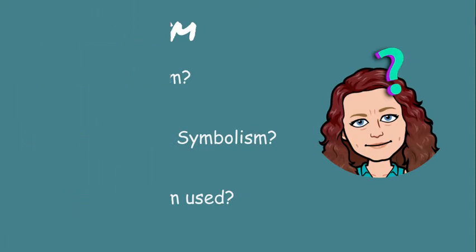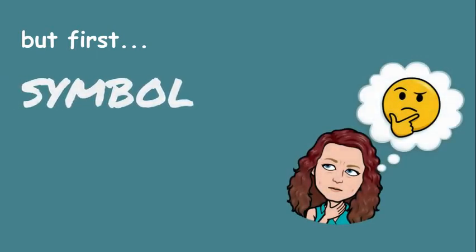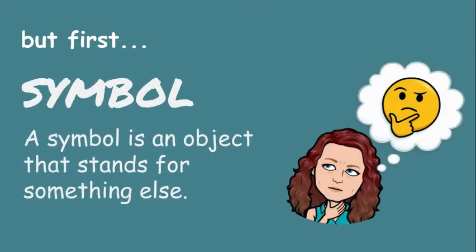But first, let's define symbolism, or symbol. A symbol is an object that stands for something else. So when something is a symbol, its purpose is to convey an idea, a feeling, a belief, or an object that it may represent.